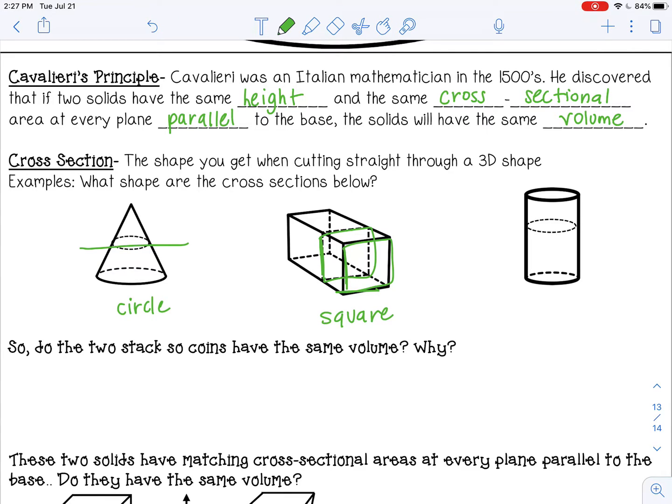And then for a cylinder, if we cut off right here and we're cutting straight across, not at a slant, and we looked at where we cut, that would be a circular shape. So that's a cross-section.